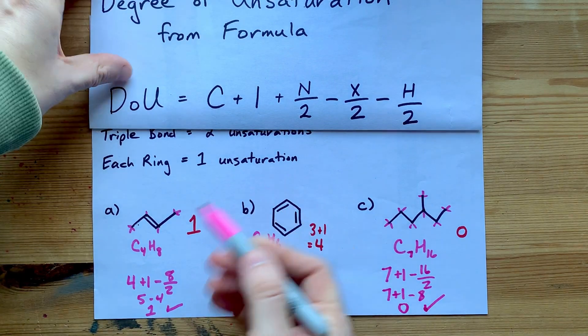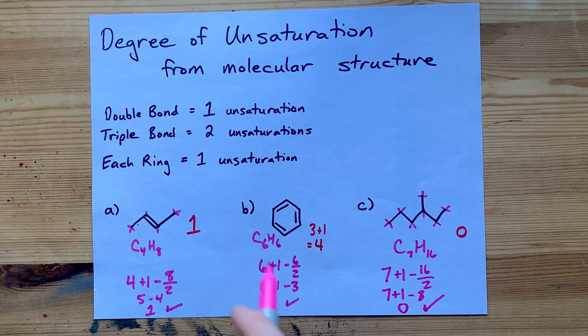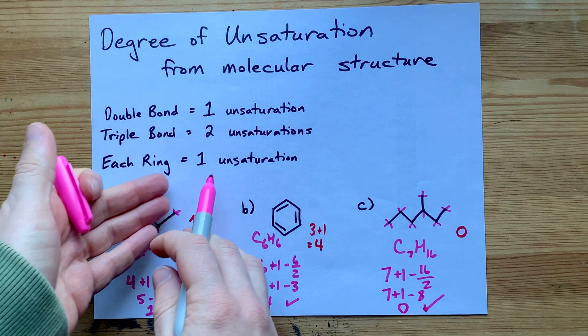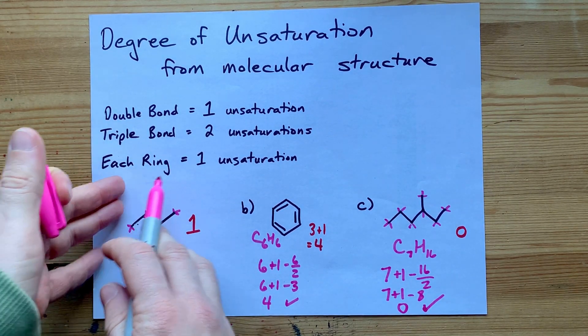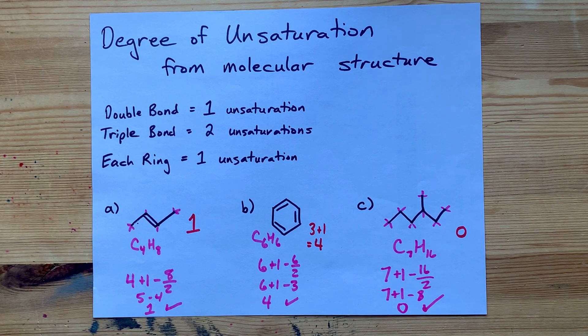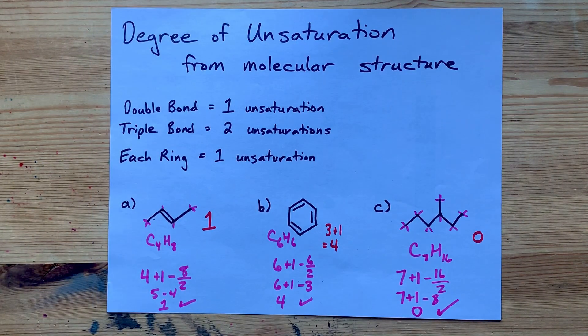I guess you don't need the formula if you have the molecular structure. A double bond contributes one, a triple bond contributes two, and a ring, each ring individually contributes one. Hey, it's a beautiful thing, just like you are. Best of luck.